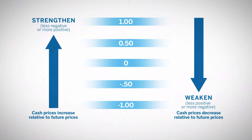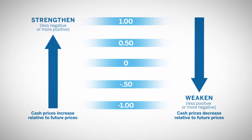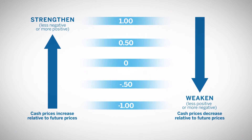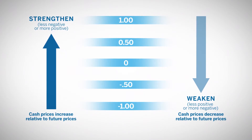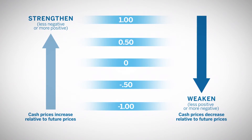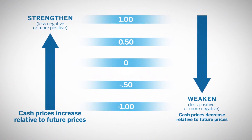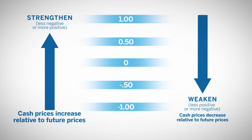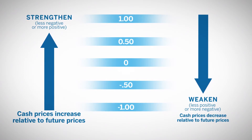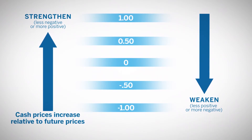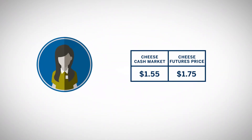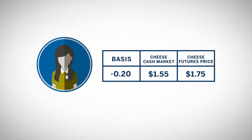Any change in one market's price relative to a change in the other will cause a change in the basis. One of the key considerations in evaluating the basis is its potential to strengthen or weaken. The more positive or less negative the basis becomes, the stronger it is; the more negative or less positive it becomes, the weaker it is. The basis will strengthen if the cash market price increases relative to the futures price. For example, suppose the cash market price for cheese is $1.55 per pound and the cheese futures price is $1.75, giving a basis of $0.20 under.